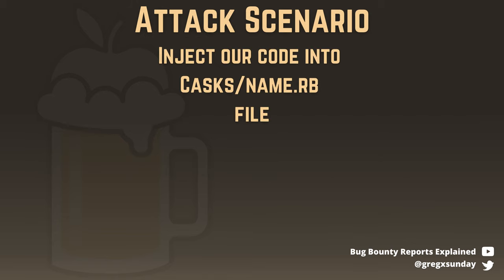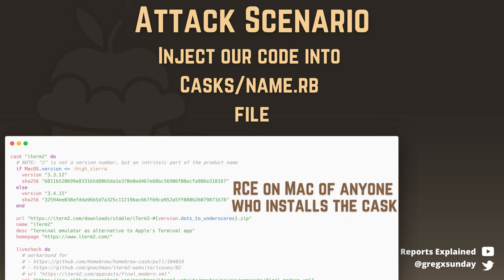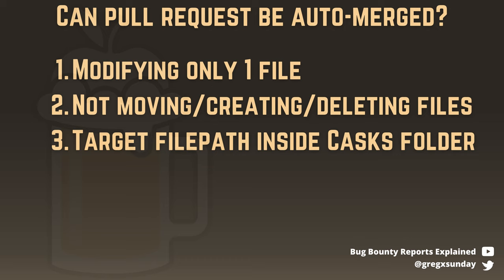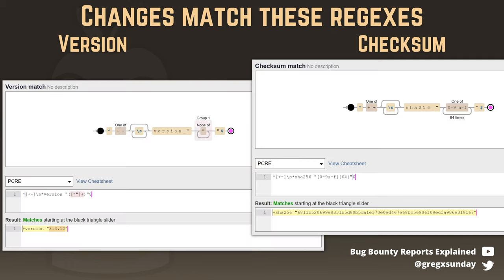Let's consider an attack scenario where we would like to inject our code into a cask configuration file. Although it's mostly used for storing static information, it's still a Ruby file, so injecting code here would lead to an RCE on the machine of anyone who installs the cask. But before that, your pull request had to go through multiple checks. Two rules most relevant for us are that the count of added and deleted lines must be the same, and all changed lines must match these regexes, so only versions and checksums could be changed.